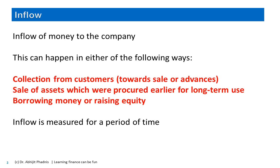The second reason money can come into the bank account is from past investments. These could be in property, plant, equipment, machinery, or even financial investments. When assets created for long-term use are eventually sold off, we realize money from that sale — that is the second reason for inflow. The third reason is borrowing money or raising equity. When we receive money from lenders or equity owners, that constitutes the third inflow category. These three separate buckets of inflows will have interesting interpretations when we discuss the cash flow statement later.